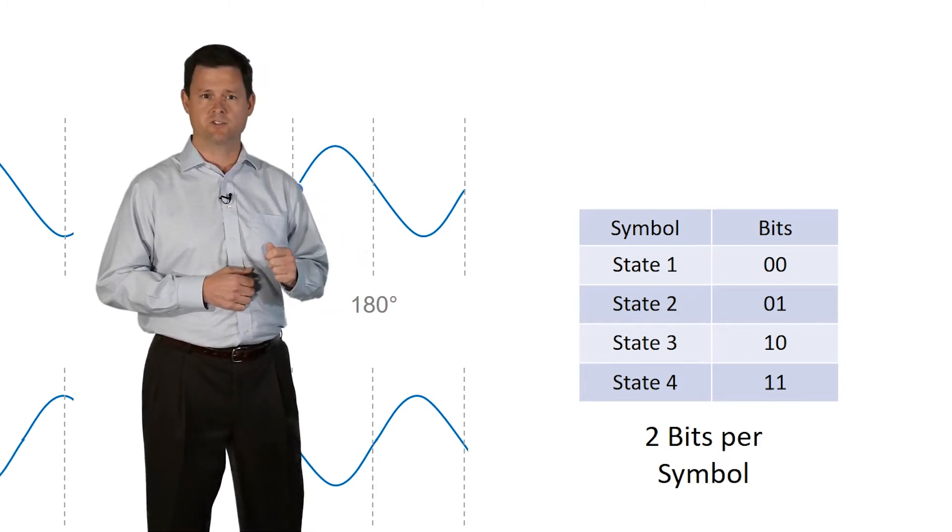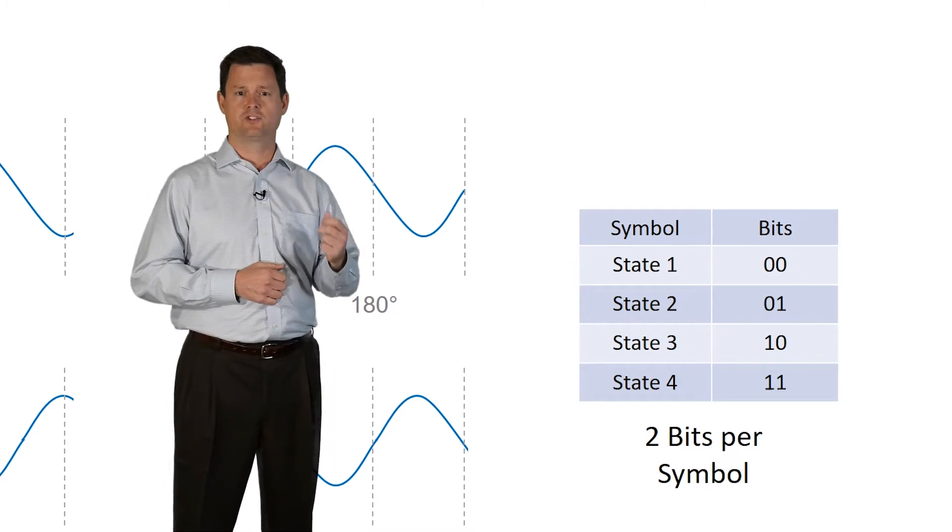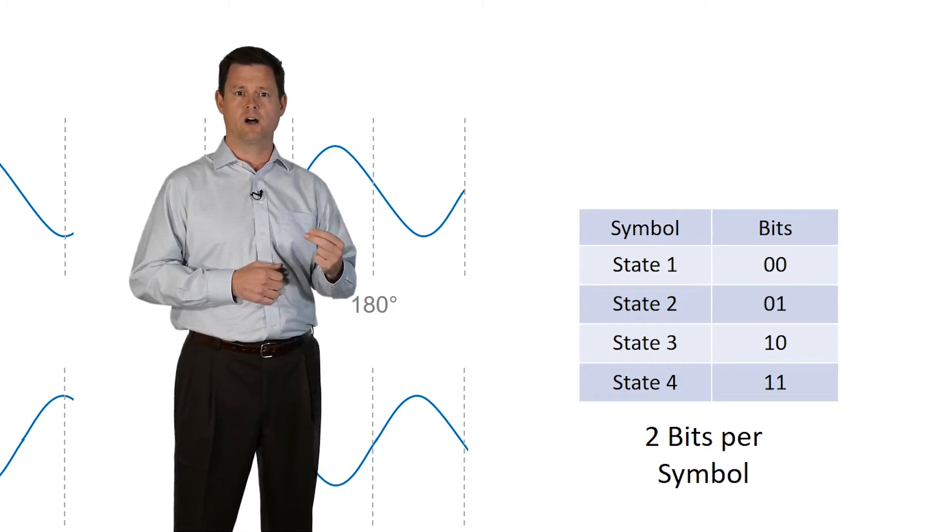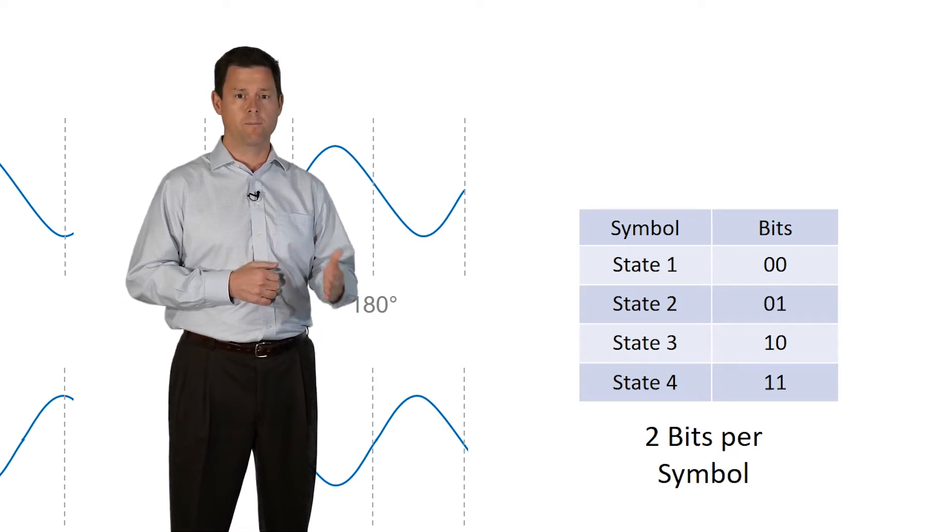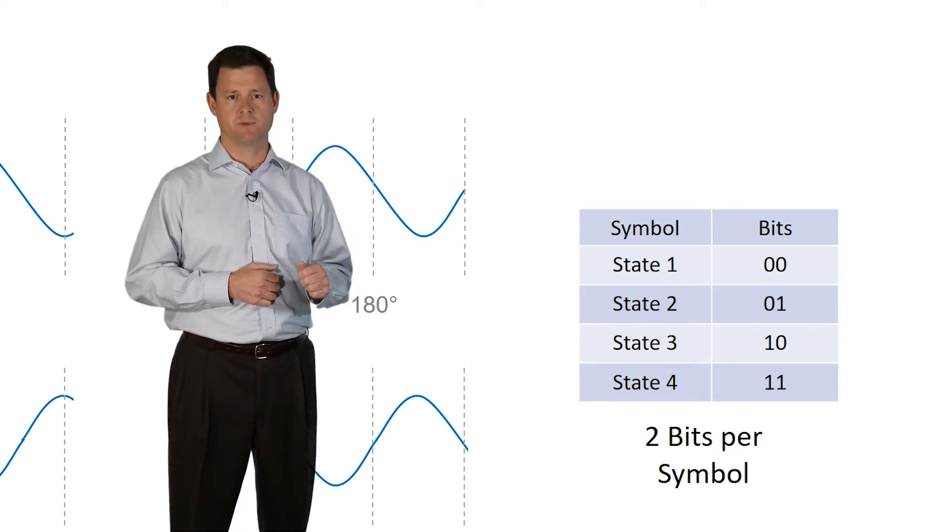So, because each measurement we take will provide us two bits of information, we call this two bits per symbol. This technique enables us to transport more bandwidth without increasing the speed of the transmission.